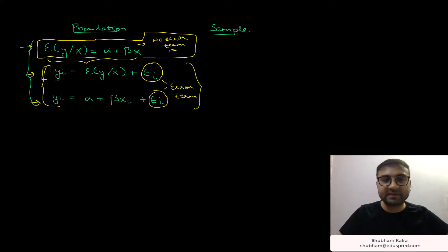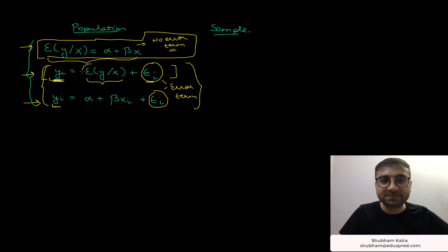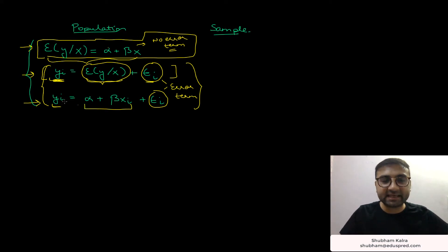In equation number two, we are writing the value that the y variable takes for a particular entity. So yi means the value of the variable y for entity i. This is equal to an average value from equation one plus some error term. When you write the equation at an entity level, then you write the error term. Equation three is a combination of equations one and two. In equation two you have the expected value of y given x, and from equation one you know that equals alpha plus beta x. When you substitute this, you get yi equal to alpha plus beta xi plus epsilon i — so equation three has an error term and is a combination of equations one and two.